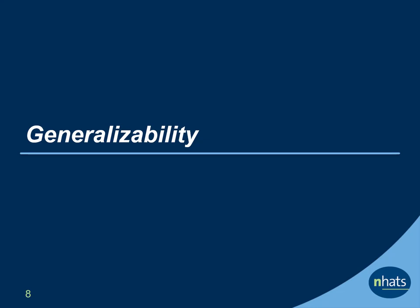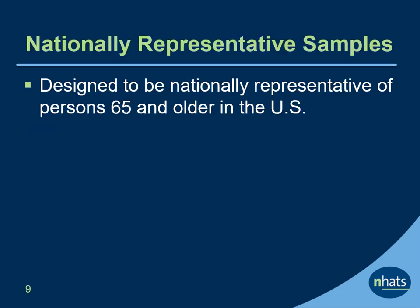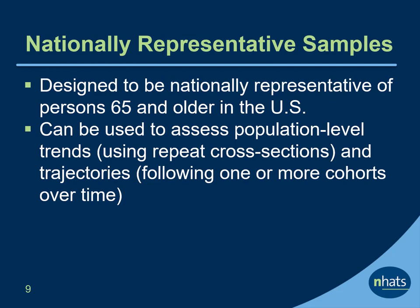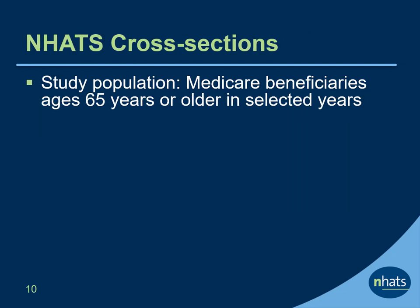Next, let's talk about generalizability of the data. NHATS is designed to be nationally representative of persons ages 65 and older in the U.S. NHATS can be used to assess both population-level trends using repeated cross-sectional samples and to assess trajectories — that is, changes within individuals — by following one or more cohorts. Each round or year of NHATS is designed to be representative of the population ages 65 and older in select years.